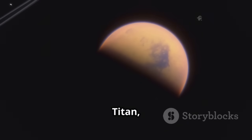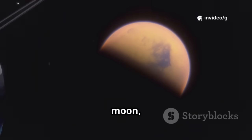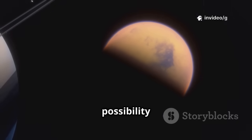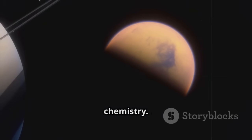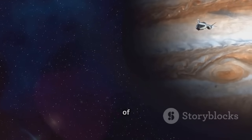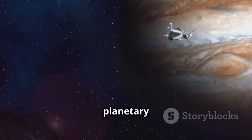The probe's close pass by Titan, Saturn's largest moon, revealed a thick, nitrogen-rich atmosphere, raising questions about the possibility of liquid and prebiotic chemistry. This trajectory flung Voyager 1 out of the plane of the solar system, ending its planetary tour.